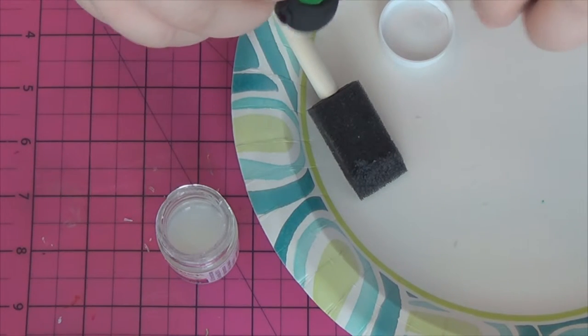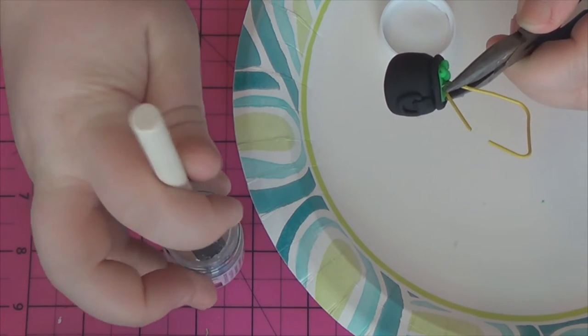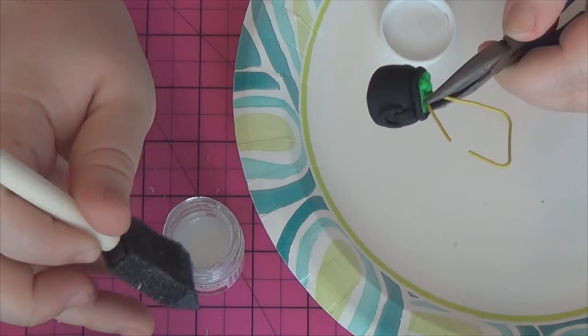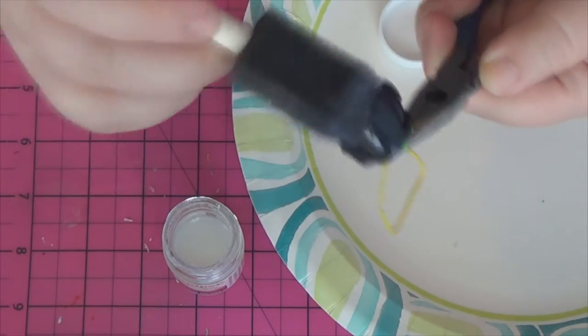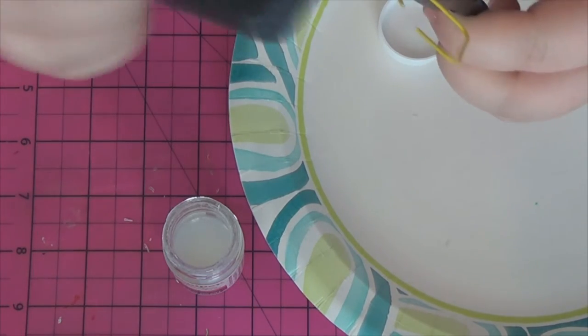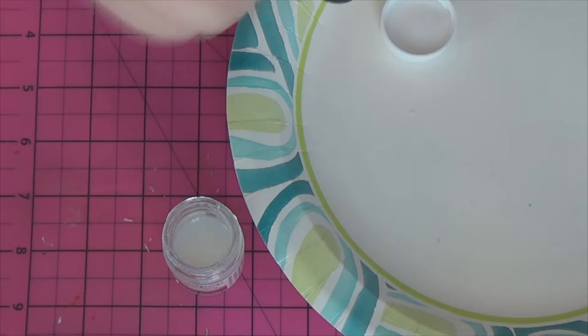So I put it on my paper clip and I held it with my needle nose pliers and I started glazing it. Now I found out through glazing this that I have to kind of be careful with putting too much glaze, especially on the inside of those handles, because it tends to gloop up as it dries.